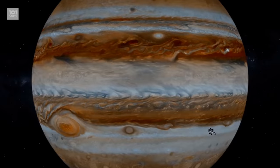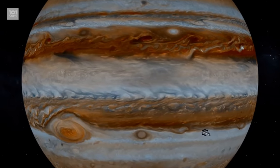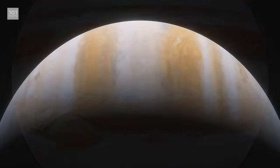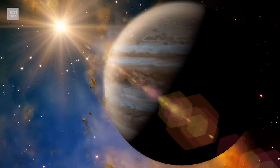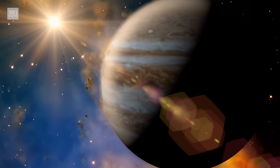Jupiter also has a very thin ring system. It's quite faint and can be difficult to see, and is made mostly of dust. There are four parts to these rings of varying thickness and brightness. The smallest is the halo, then the main ring, and then the two wider and thicker rings called the Gossamer rings.